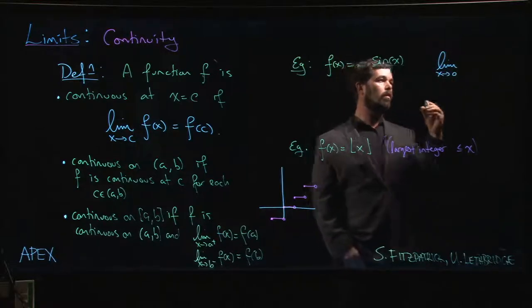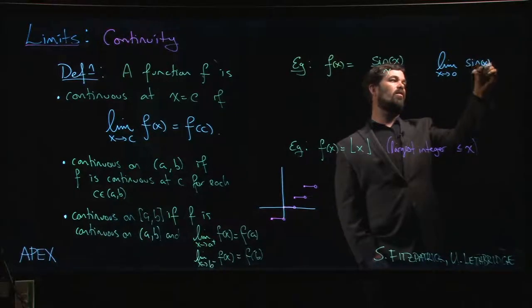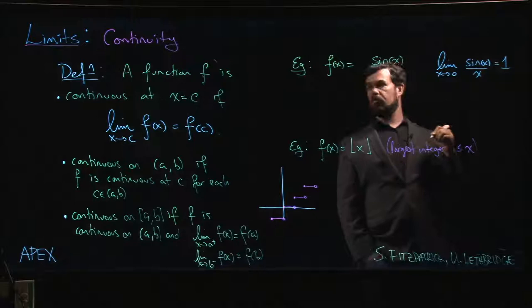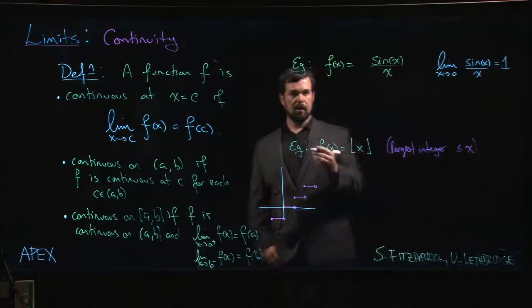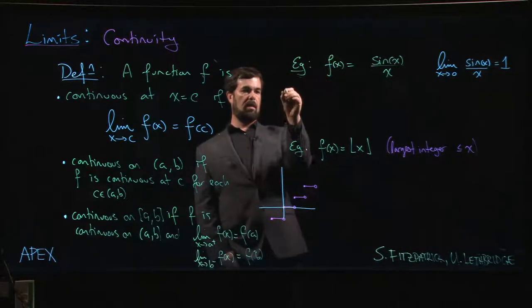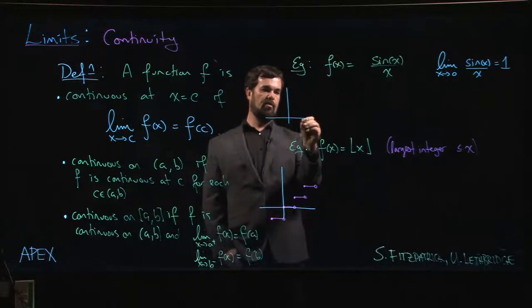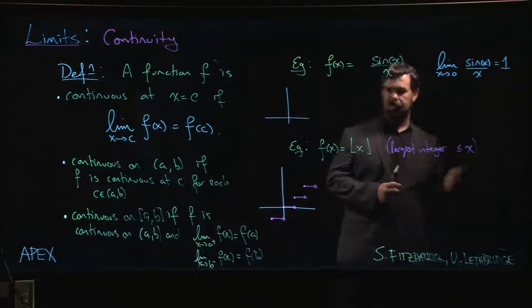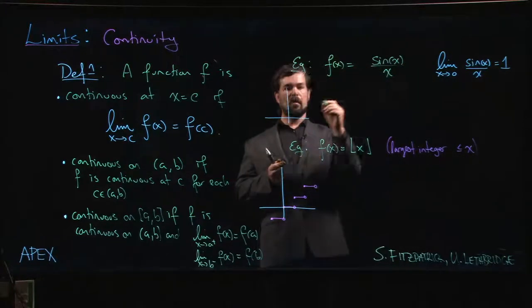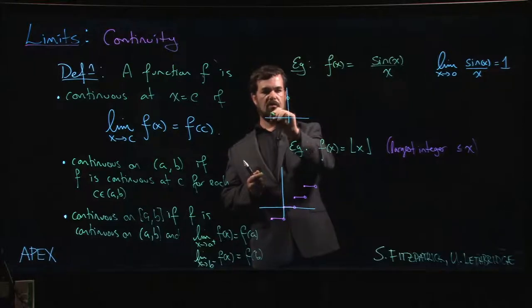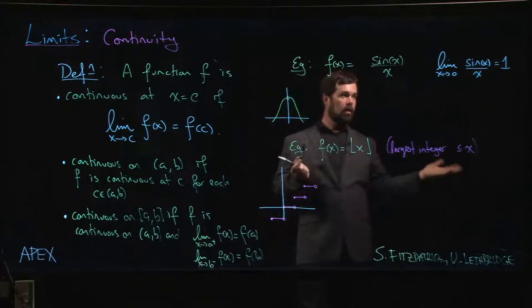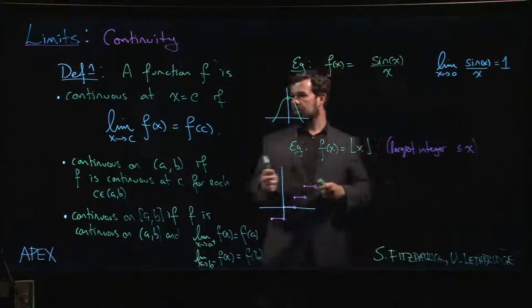zero of sine x over x is one. Now knowing that limit is one is not quite enough for me to tell you that the function is continuous, because if you were to sketch the function, it's undefined at zero. You'd have a sketch which did something like this - there would be a hole in the graph. So the limit exists, but the fact that the limit exists is not enough; this function is not yet continuous.